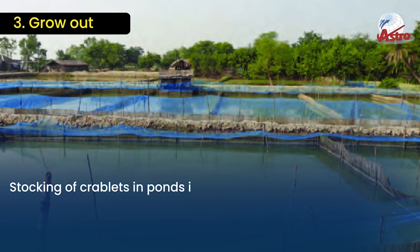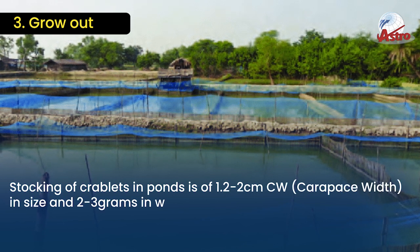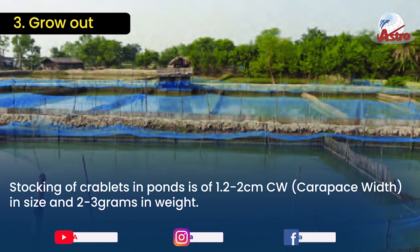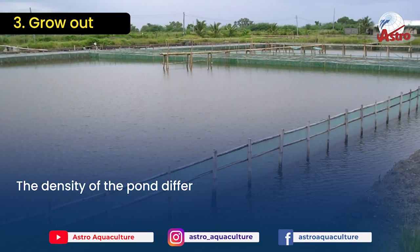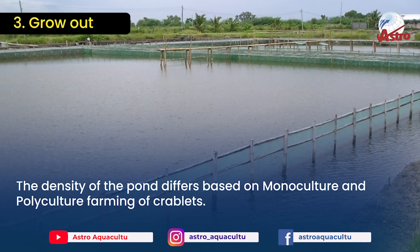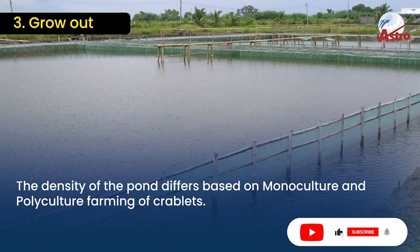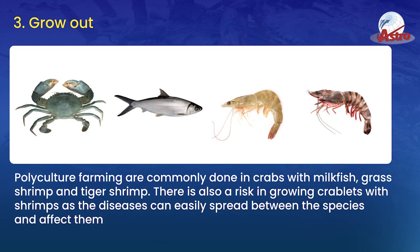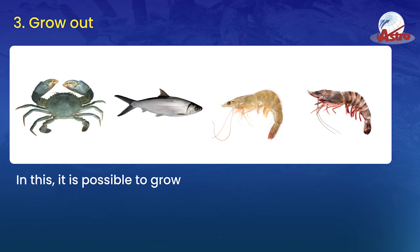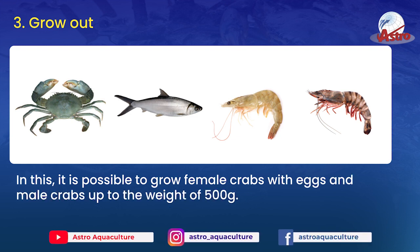Grow Out: Stocking of crablets in ponds is done at 1.2 to 2 centimeters carapace width (CW) in size and 2 to 3 grams in weight. The density of the pond differs based on monoculture and polyculture farming. Polyculture farming is commonly done with milkfish, grass shrimp, and tiger shrimp. There is a risk in growing crablets with shrimps as diseases can easily spread between species. It is possible to grow female crabs with eggs and male crabs up to a weight of 500 grams.